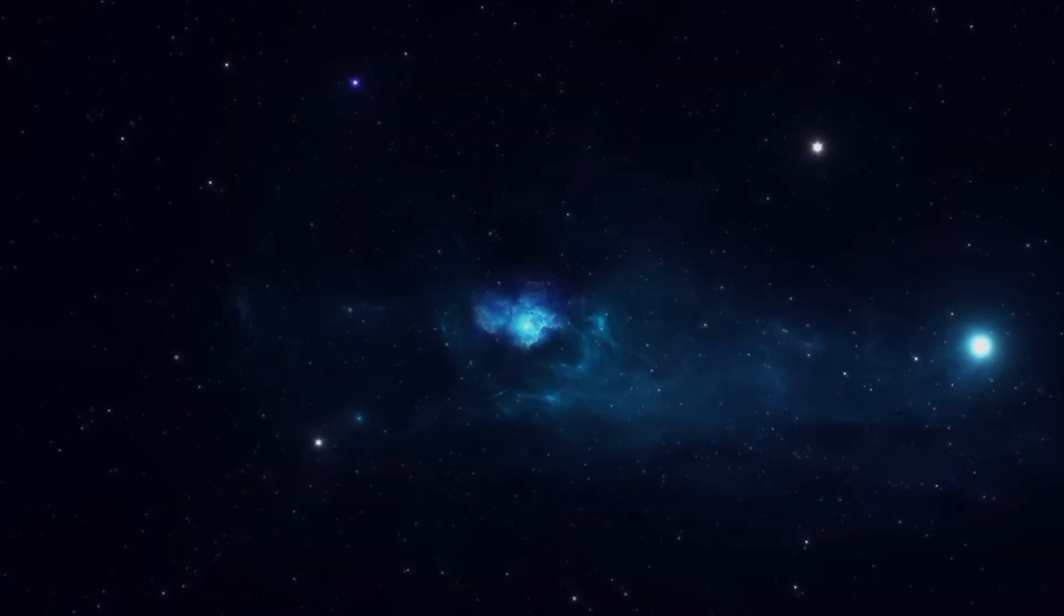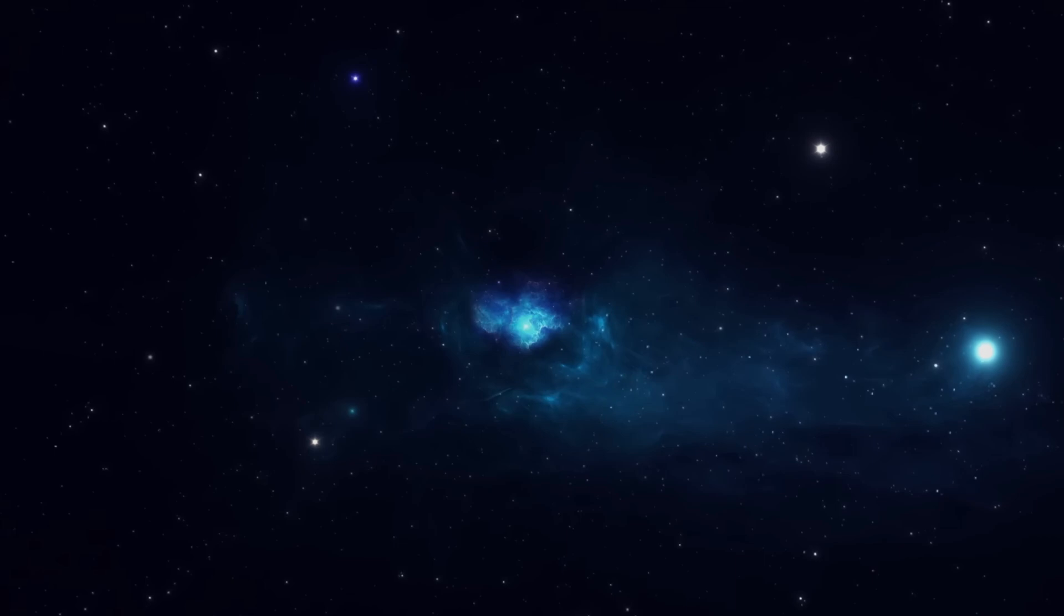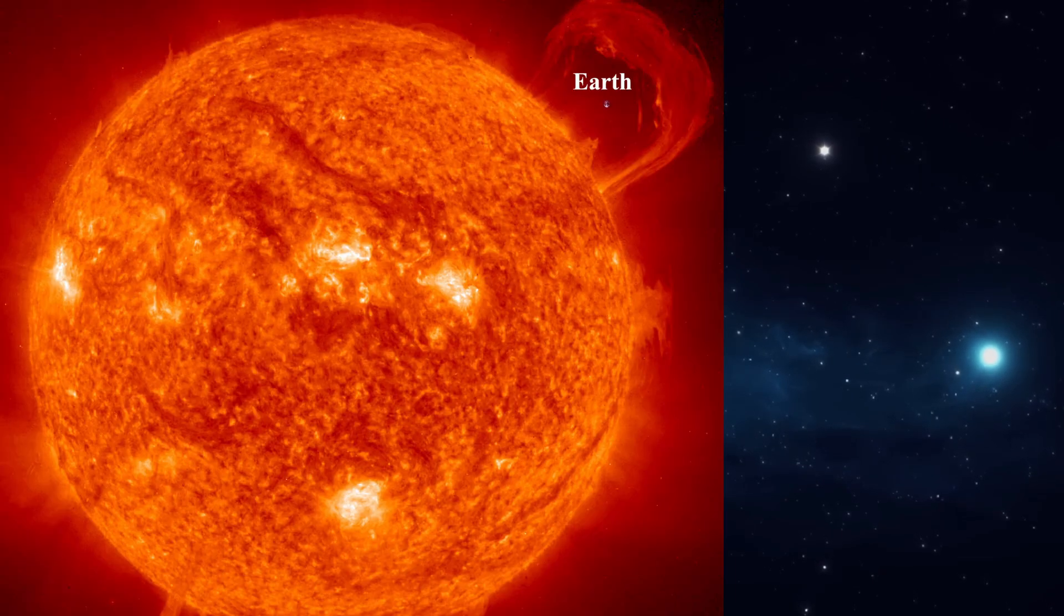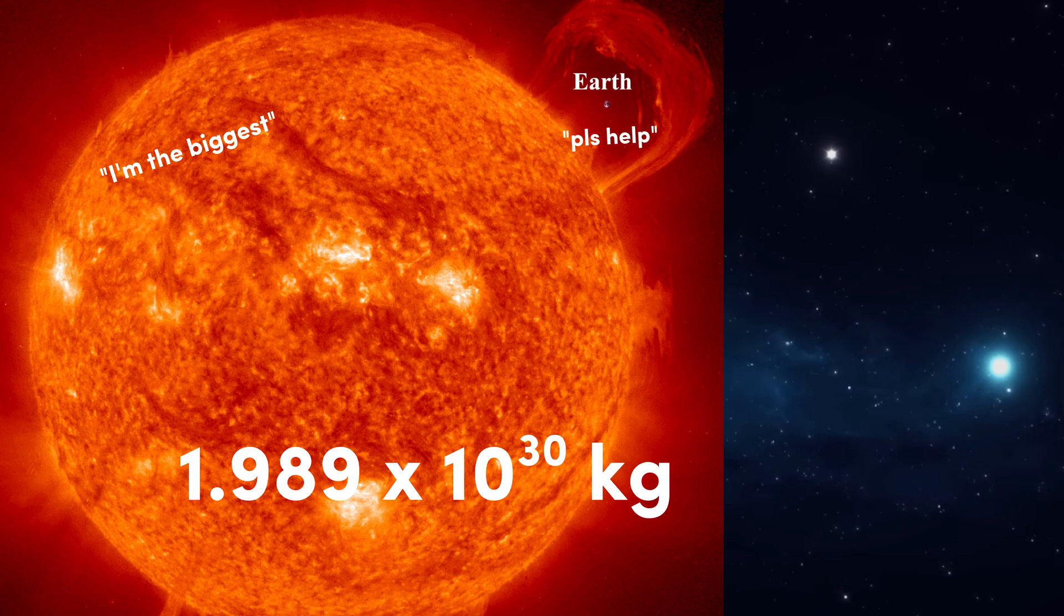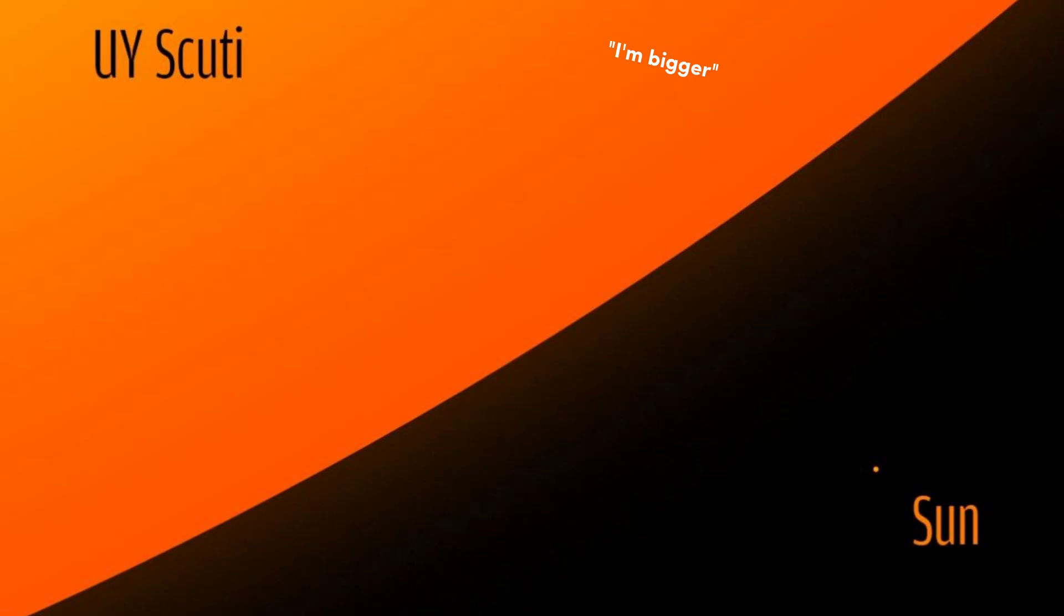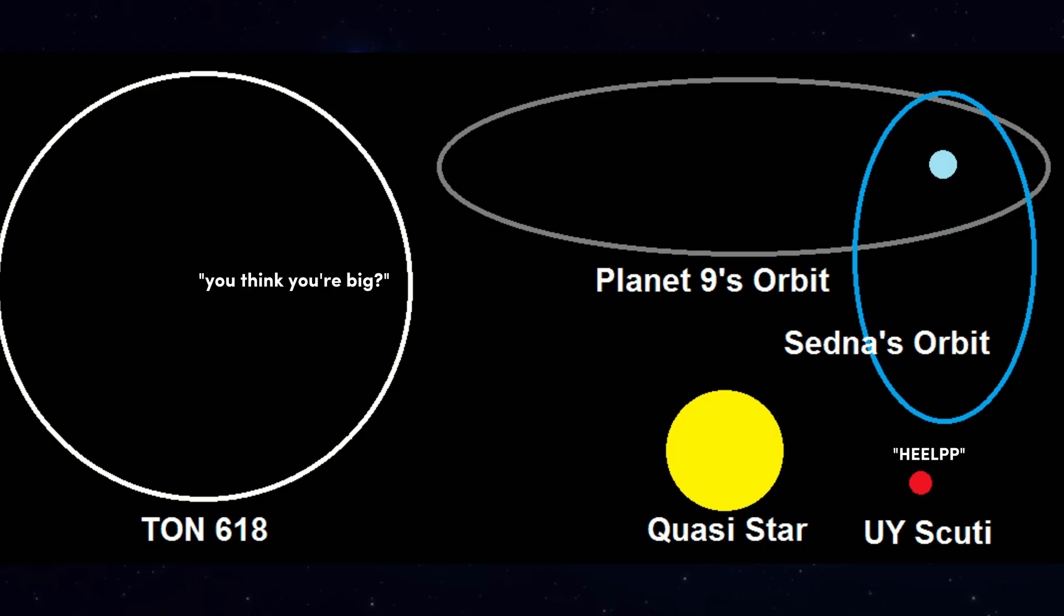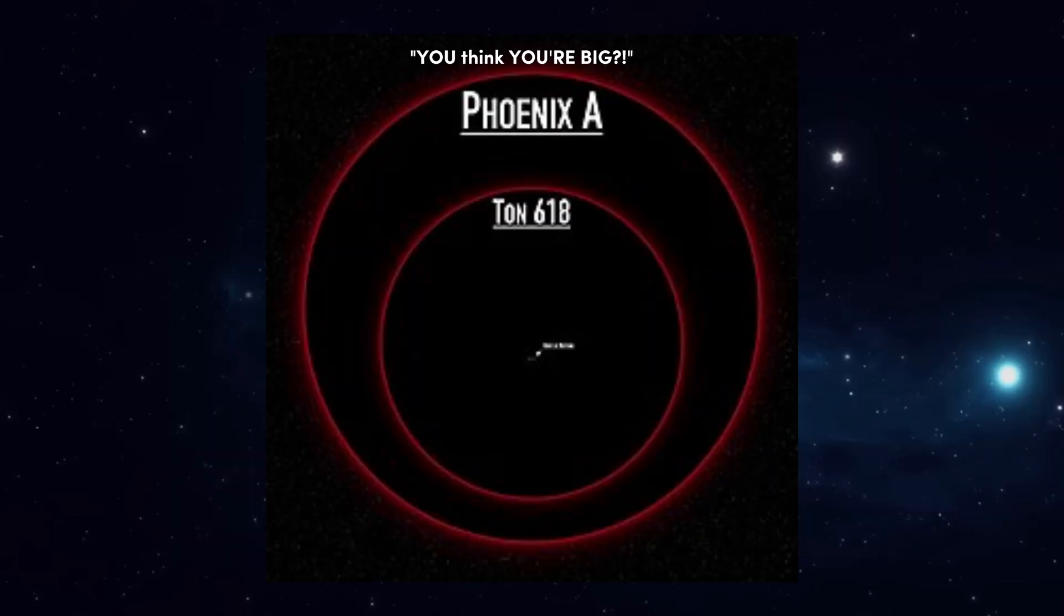Again, just one more quick recap. One solar mass is the mass of the sun, which is roughly 1.989 times 10 to the power of 30 kilograms, which is 333,000 times the mass of Earth. The sun contains 99.8% of the mass of the entire solar system, so you can have a pretty clear idea just by these descriptions how heavy the sun already is.